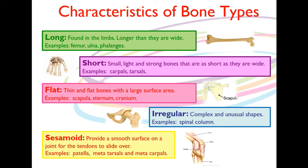Irregular shaped bones are complex and unusual in their shape. Your spinal column vertebrae, which fit in between each other, are termed irregular shaped. Finally, the sesamoid bone provides a small surface on a joint and the tendon slides over that. We find this in the patella — the kneecap — as well as the metatarsals in the toes and the metacarpals in the hand.